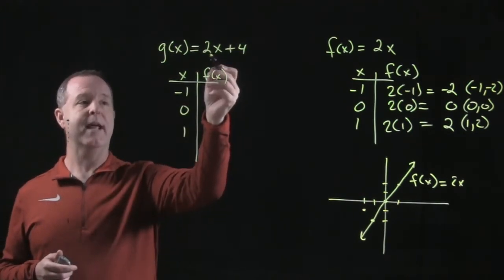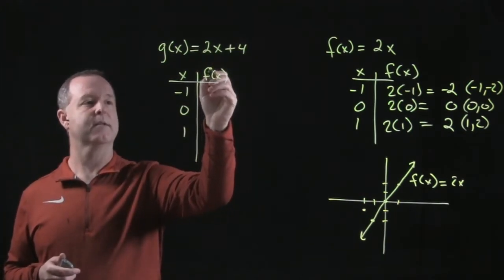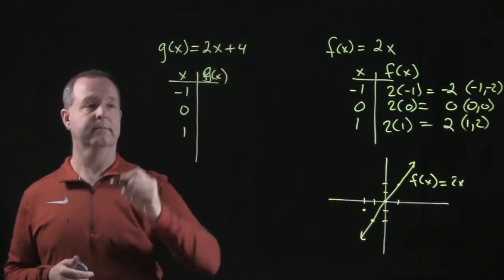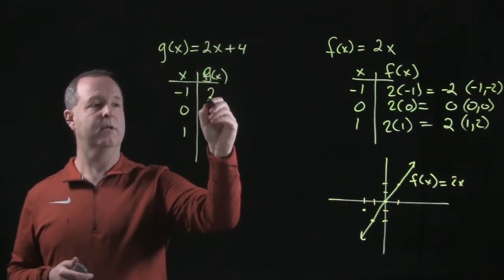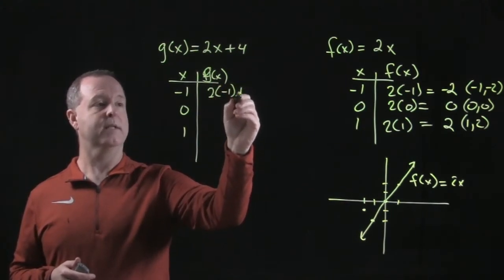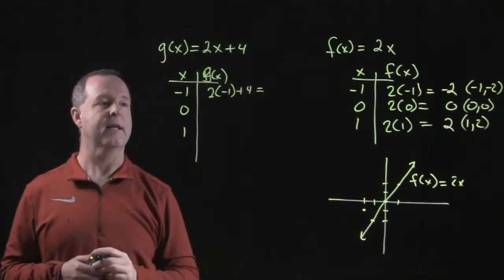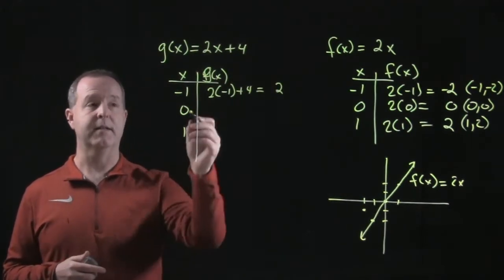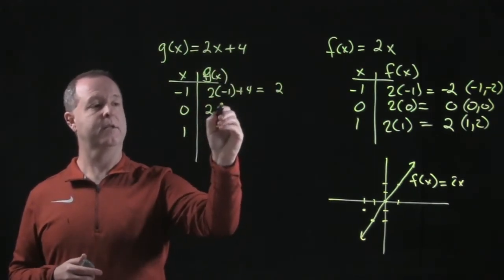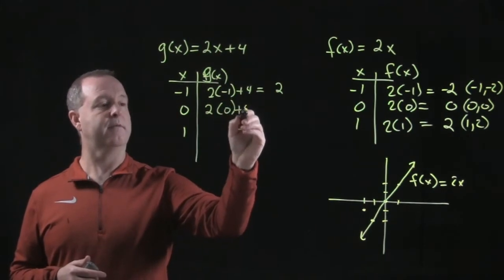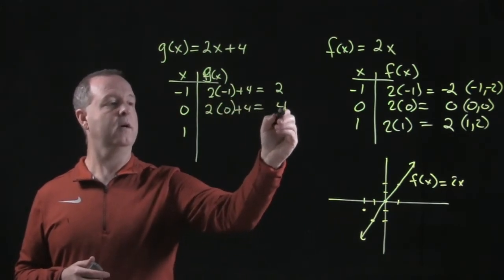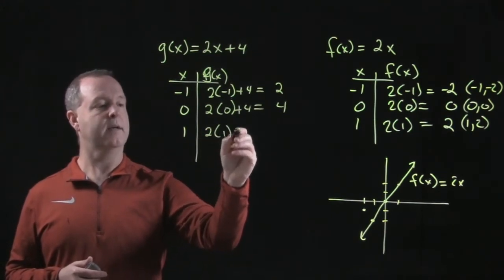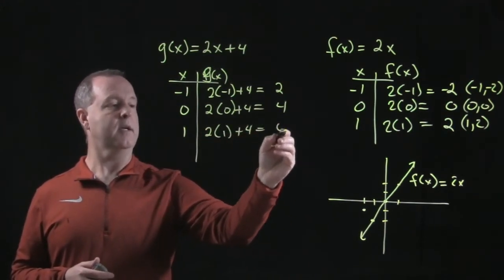Negative 1, if I put negative 1, that's g(x) now, isn't it, folks? Not f(x). So if I put negative 1 into that function, I become 2 times negative 1 plus 4 equals 2. If I put 0 into this function, that's 2 times 0 plus 4 equals 4. And if I put a positive 1, 2 times 1 plus 4 equals 6.